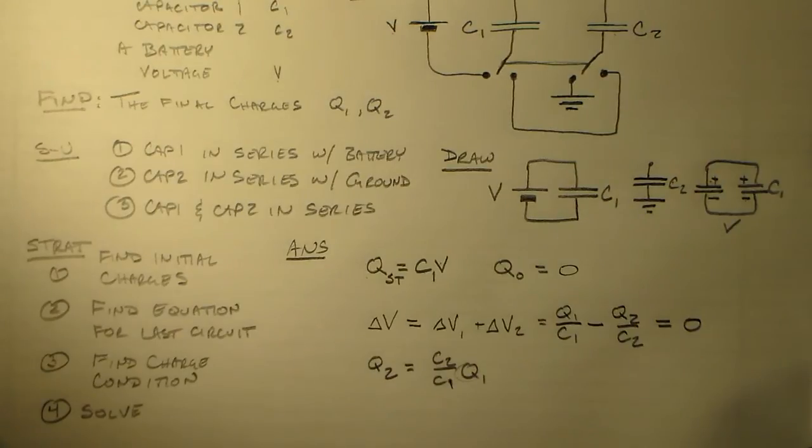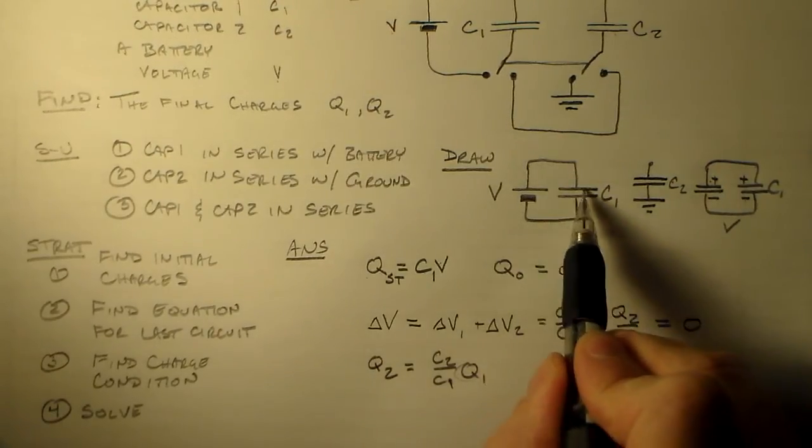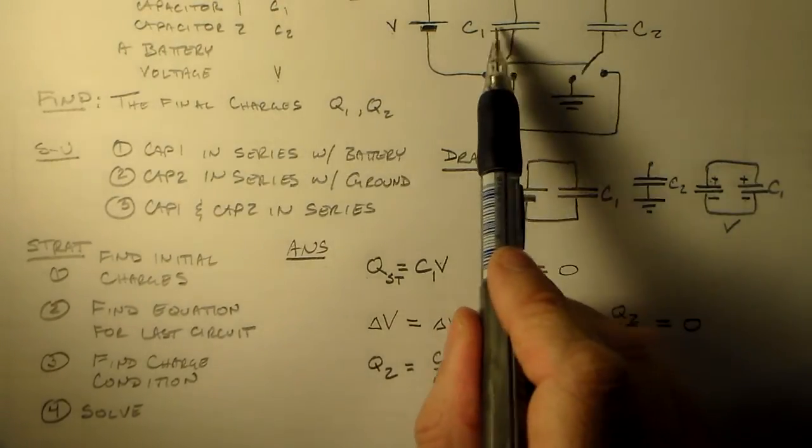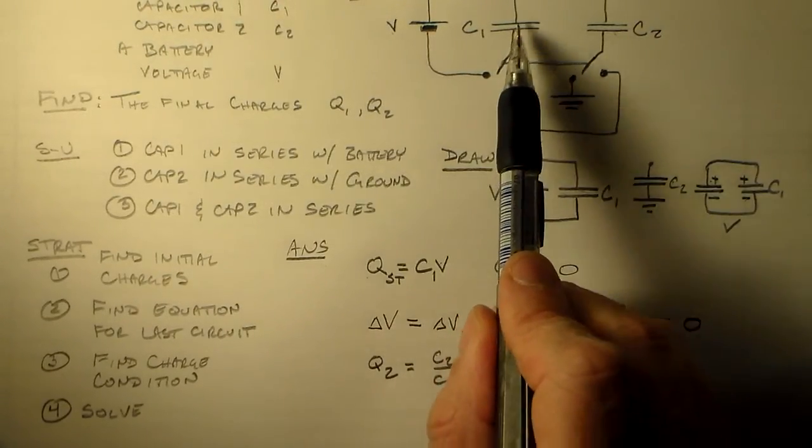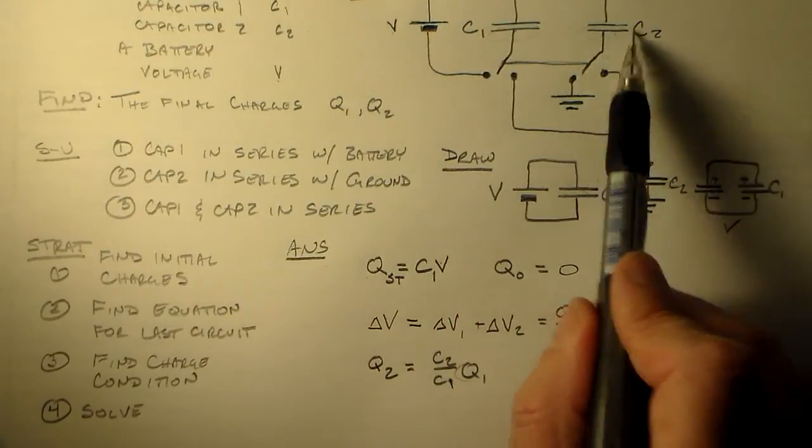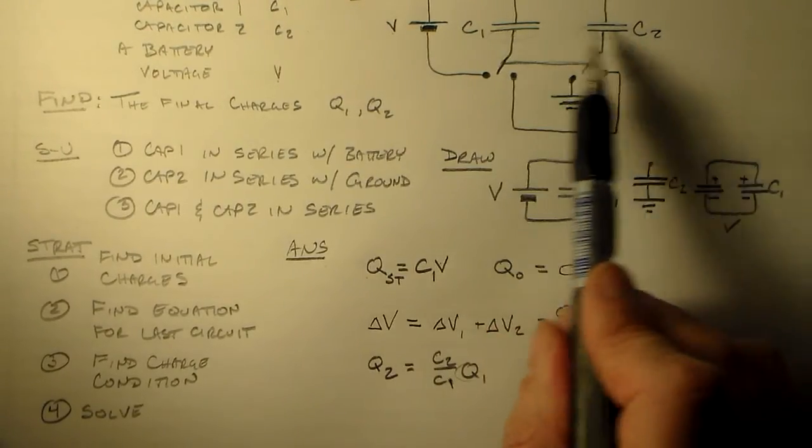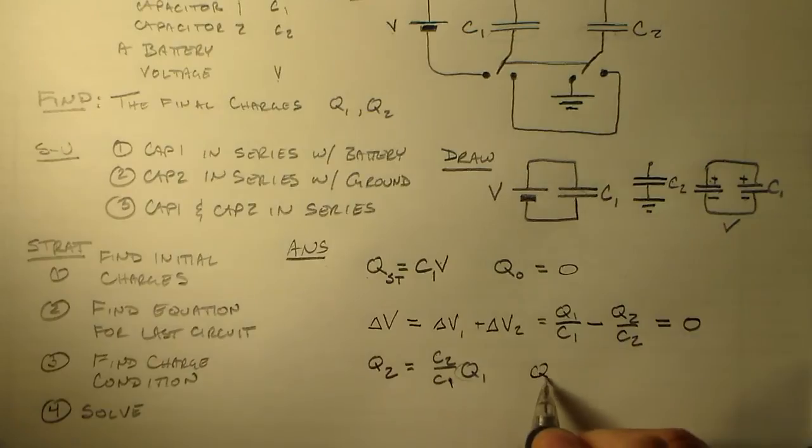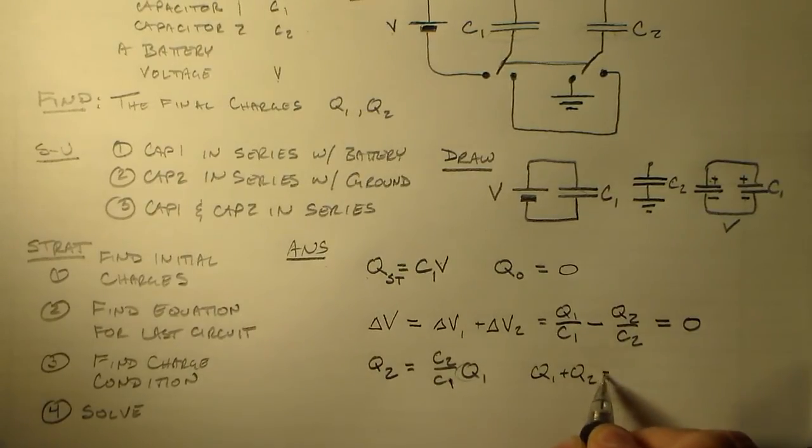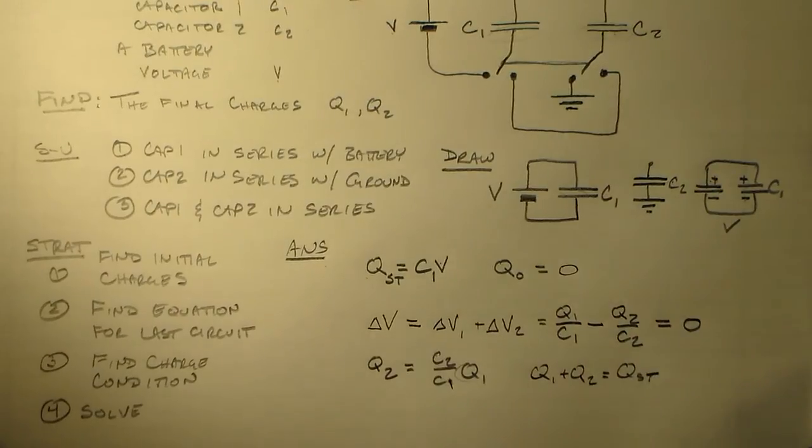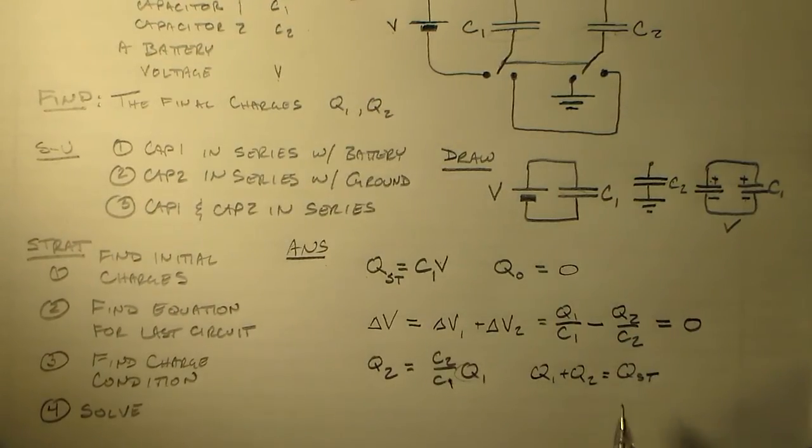Is there anything else interesting? Oh, we have one more charge condition. Once we've charged this up, and then we switch this over, all of the charge is going to be on here. And we have conservation of charge. So we can't lose any charge. So the total charge of these two capacitors, Q1 plus Q2, that's going to equal QST. So the final, the sum of the final charges is going to equal the sum of the initial charges, and C2 is initially not charged. Sounds pretty good to me.